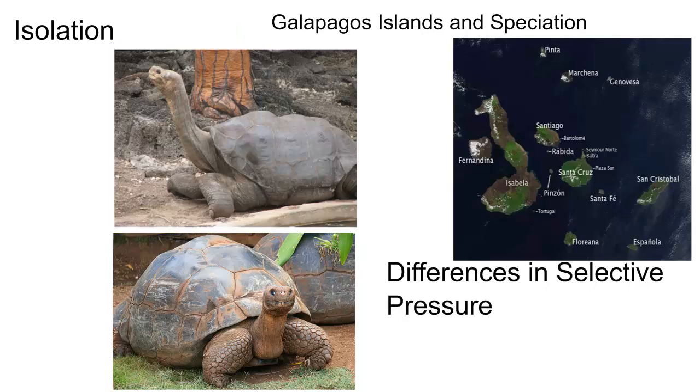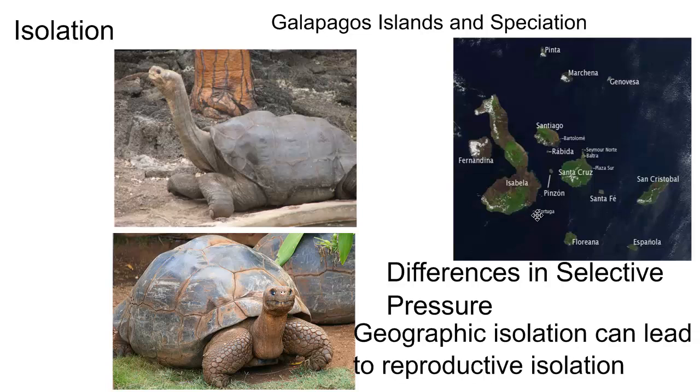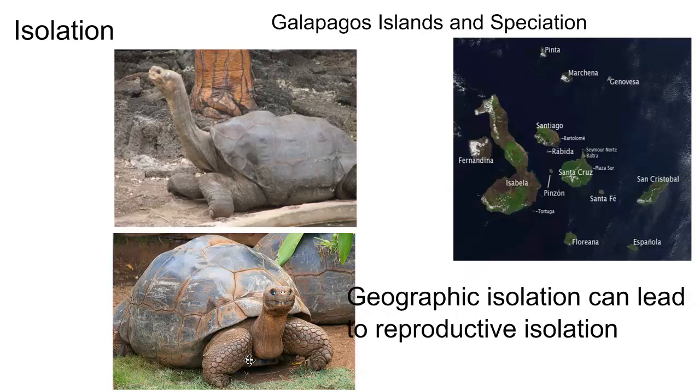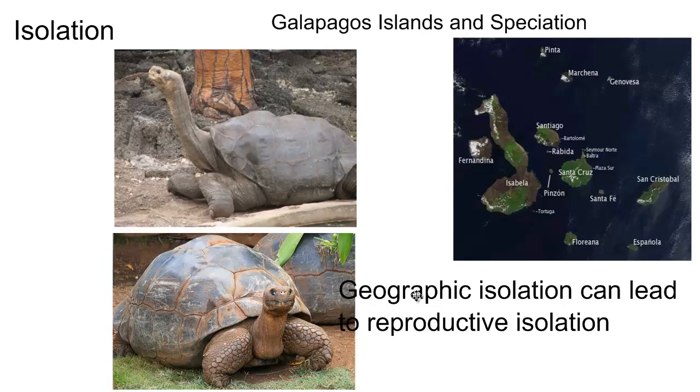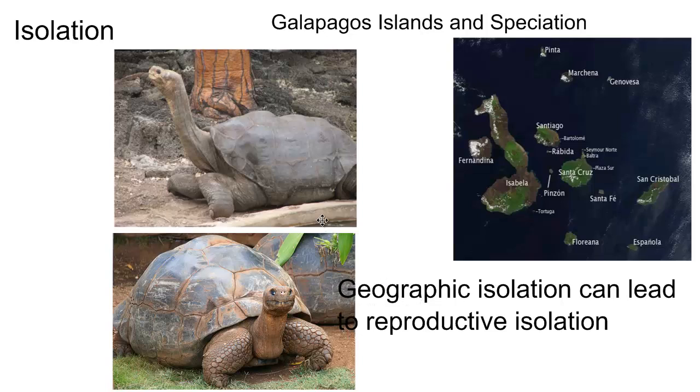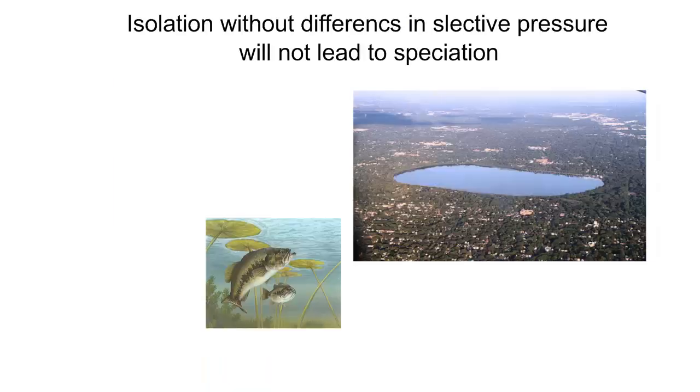Now, ultimately, geographic isolation, so isolation in terms of geography, can lead to reproductive isolation. And reproductive isolation is when species will no longer reproduce. So Lonesome George, they tried for years to get tortoises from other islands to reproduce with him because he was the last of his species. And George would not reproduce with any of them. And part of the reason for that is that these tortoises, because for so long they'd been on different islands, are reproductively isolated. They will not reproduce with each other.